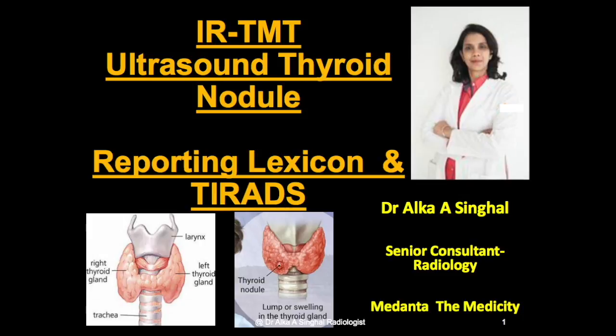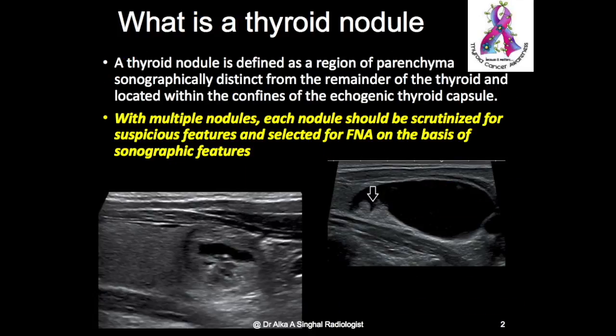Ultrasound thyroid nodule reporting lexicon and thyroid score. A thyroid nodule is an area of the thyroid which is sonographically distinct from the remainder of the thyroid and is still located within the confines of the thyroid capsule. Based on the ultrasound features, we ascertain whether this is likely going to be benign or malignant and accordingly subject to biopsy.